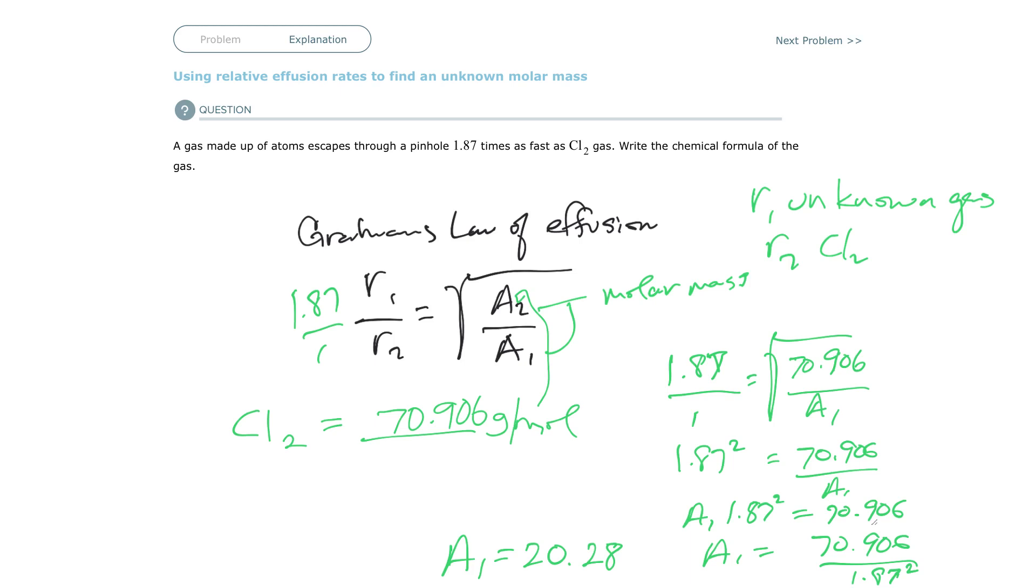Well, I look on the periodic table, and I look for any element that's close to 20.28. And so I'm looking, looking, looking, and I see that neon is 20.18, and that's close. So that's my guess. I'm going to say that that is neon gas. I think you can do this.